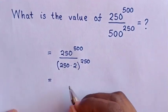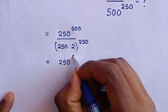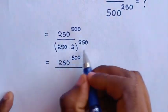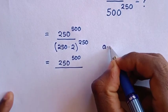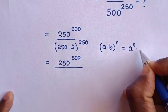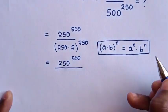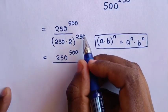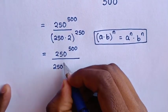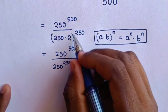This is equal to, here in the numerator is 250 power of 500 over, here in the denominator we will apply the rule a times b bracket power of n is equal to a power of n times b power of n. So it will be 250 power of 250 times 2 power of 250.